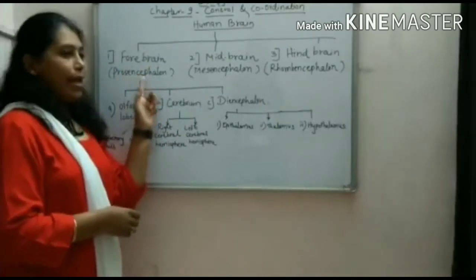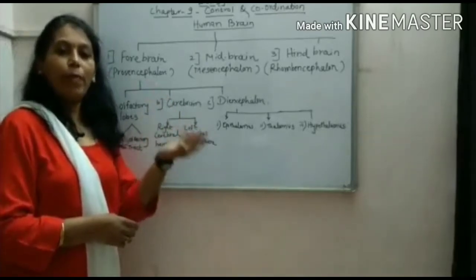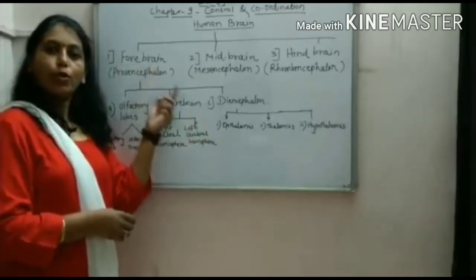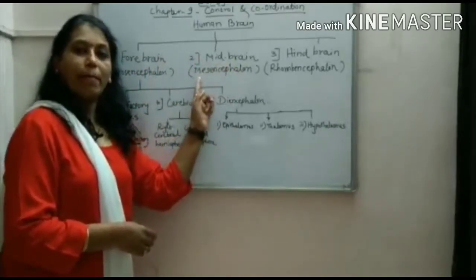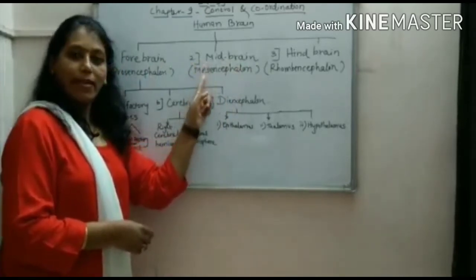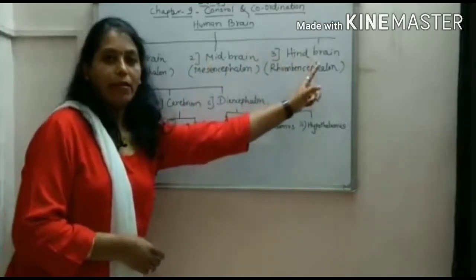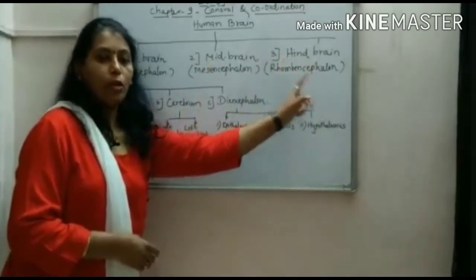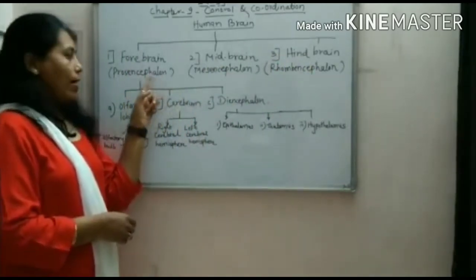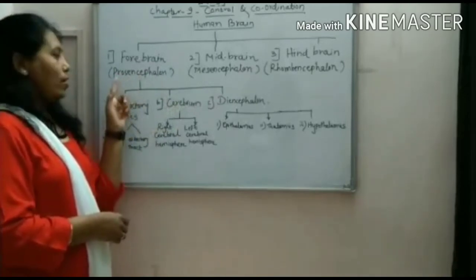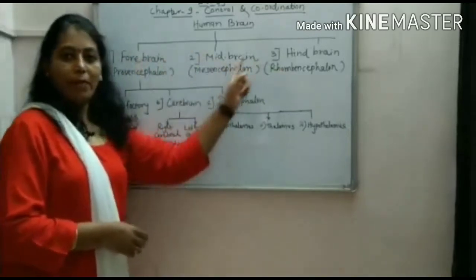The midbrain is called mesencephalon — note that 'M' is present in both midbrain and mesencephalon. The hindbrain is called rhombencephalon. To remember these, just learn the word 'encephalon' and add the prefixes: prosencephalon, mesencephalon, rhombencephalon — or simply forebrain, midbrain, hindbrain.